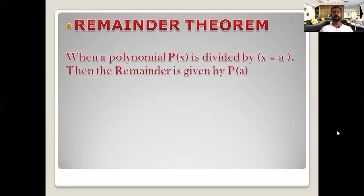When a polynomial p(x) is divided by x minus a, then the remainder is given by p(a). When you are dividing by x minus a, equate x minus a equal to 0, which gives x equal to a. Therefore p(a) gives the remainder.